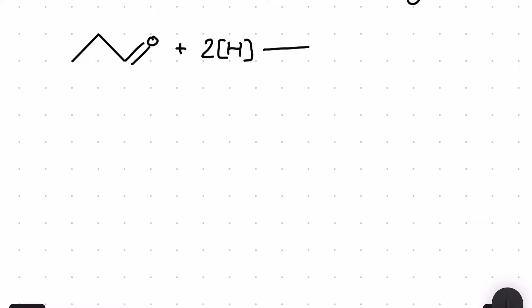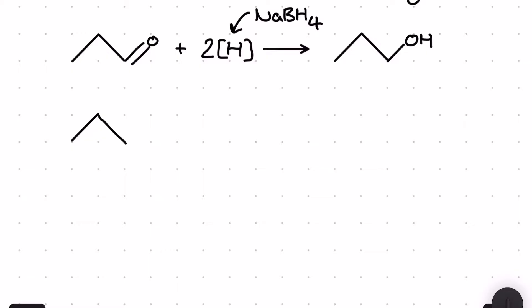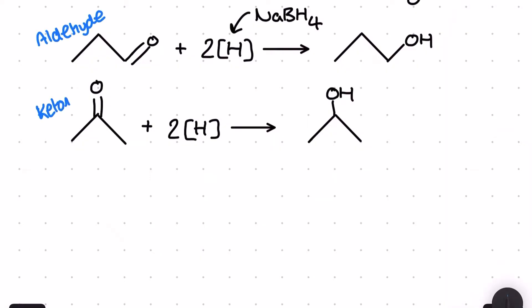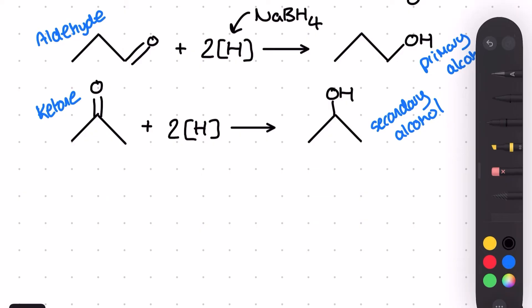Next we'll look at reduction reactions of aldehydes and ketones using the reducing agent NaBH₄, represented as [H] in the reaction equation. Aldehydes can be reduced via a nucleophilic addition mechanism to make a primary alcohol, and ketones can be reduced by NaBH₄ to make a secondary alcohol using the same mechanism. Aldehydes and ketones can only go back to their respective alcohol classifications — you can't cross these over, so keep an eye on this when drawing structures in the exam.